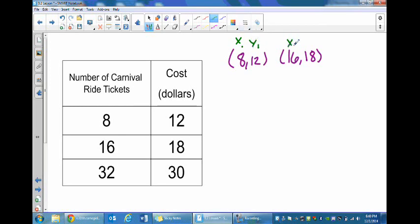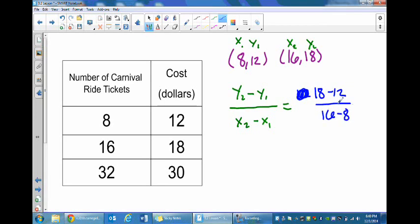Then we would use our formula: y2 minus y1 over x2 minus x1. You have 18 minus 12 over 16 minus 8. 18 minus 12 is 6, 16 minus 8 is 8. This simplifies to 3/4. So our rate of change would be 3/4, meaning 3 tickets cost $4.